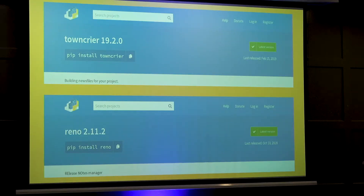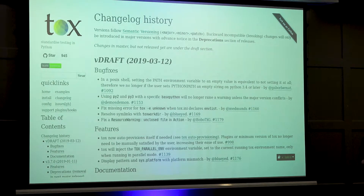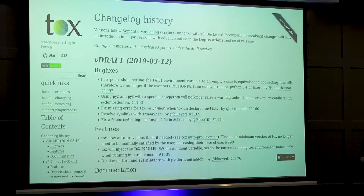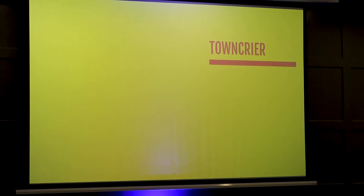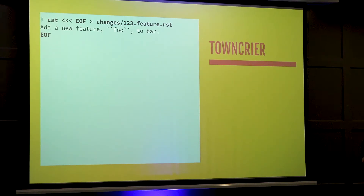It works, and it's a hell of a lot better than having nothing — but we can do better. For solving this, there are two projects I look at. The first one is Town Crier, and the second is Reno — yet again, an OpenStack plug. The second one is an OpenStack project with more power, whether or not you need it. Town Crier is used for projects like Tox, the virtualenv test runner. Reno is used for OpenStack projects.